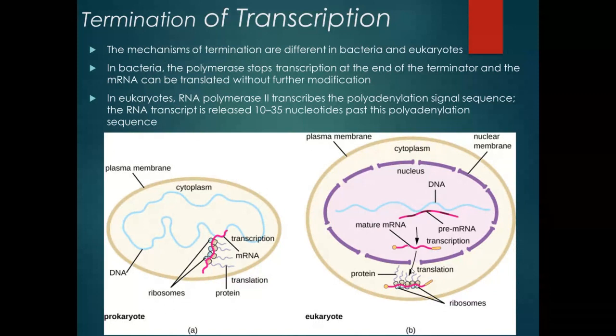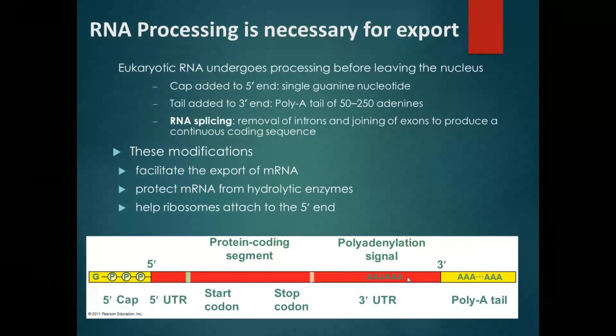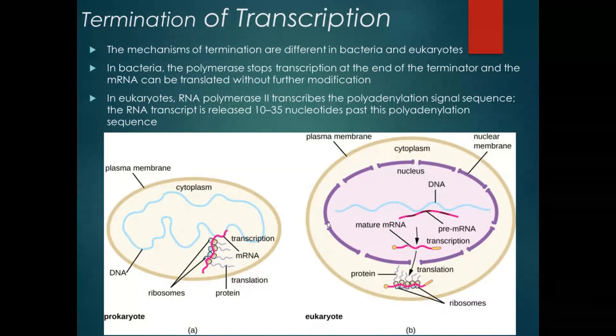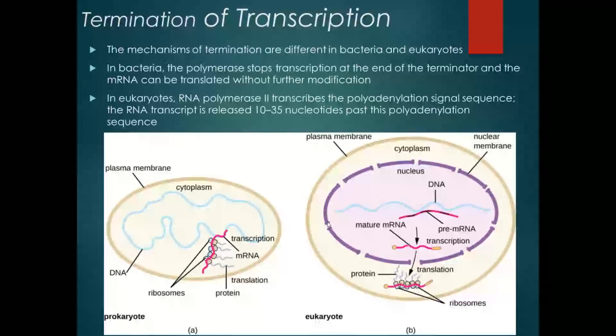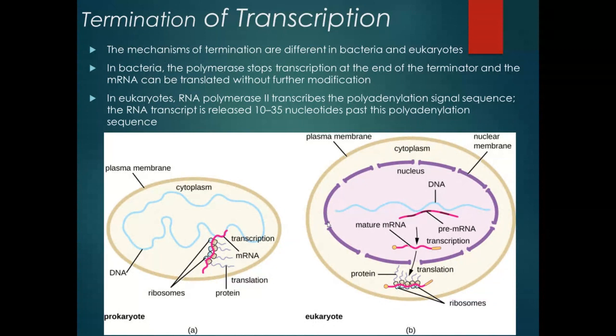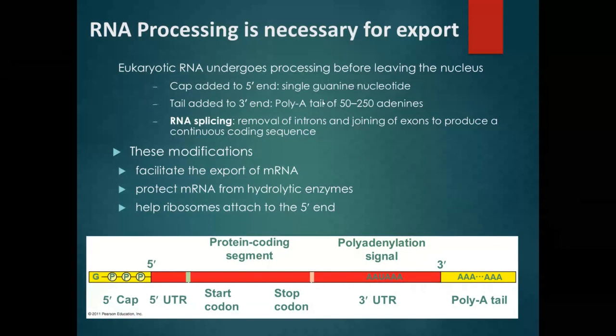In a eukaryote, translation and transcription are not coupled — they're not happening at the same time on the same RNA transcript. First, the RNA has to go through what's called processing before it can leave the nucleus, and there are no ribosomes in the nucleus. So translation can't start until the RNA gets out. This processing is required for the RNA to leave the nucleus. The nuclear pore proteins act like bouncers — they only allow mature mRNAs to leave and go out into the cytoplasm.